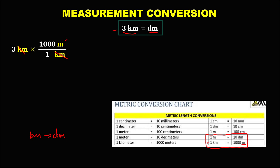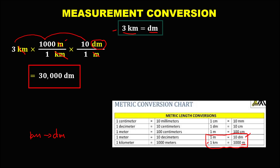We can convert now this meter to decimeter using this conversion. Since meter is in the numerator, meter must be in the denominator and decimeter must be in the numerator. For the conversion, 1 meter equals 10 decimeters. Cancel meter — we have now the unit decimeter. To simplify, multiply 3 times 1,000 times 10, so this is equal to 30,000 decimeters.